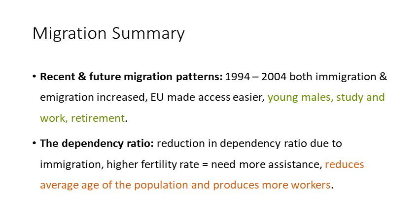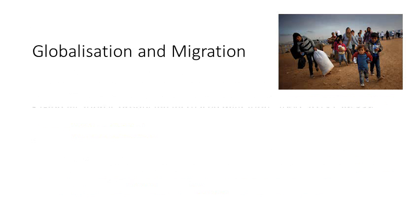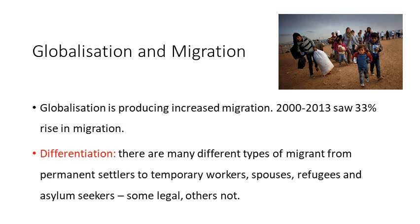With more children, of course, policy implications need to be considered — we'll need more schools and that sort of thing. Overall, a high immigration rate reduces the average age of the population and produces more workers. Globalisation is also producing increased migration. From 2000 to 2013, we saw a 33% rise in migration globally, and this is something that has continued since 2013.